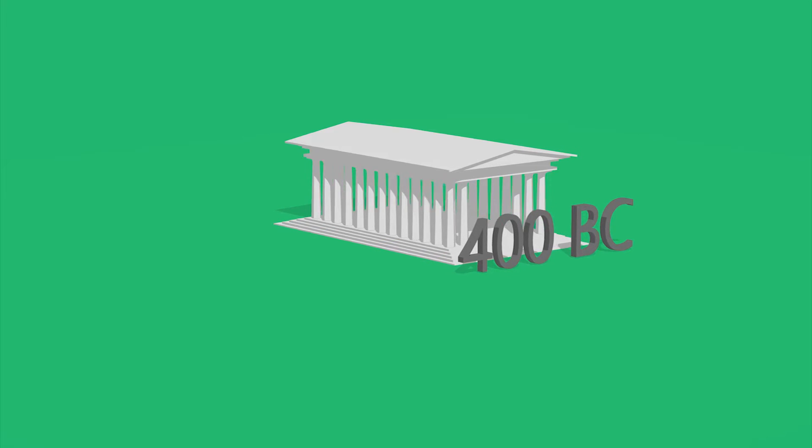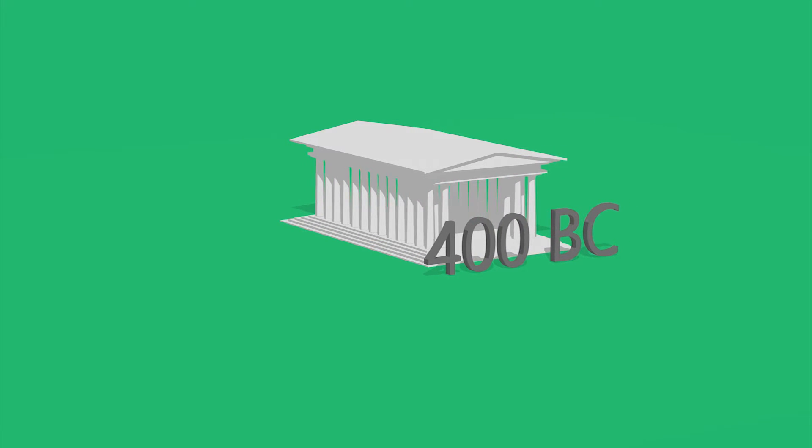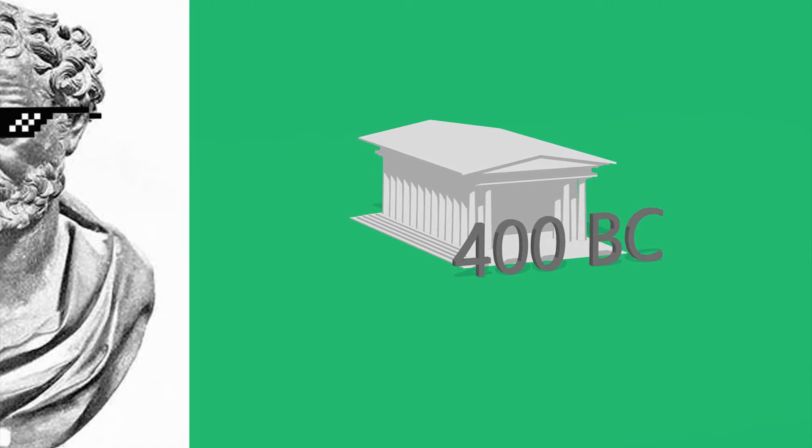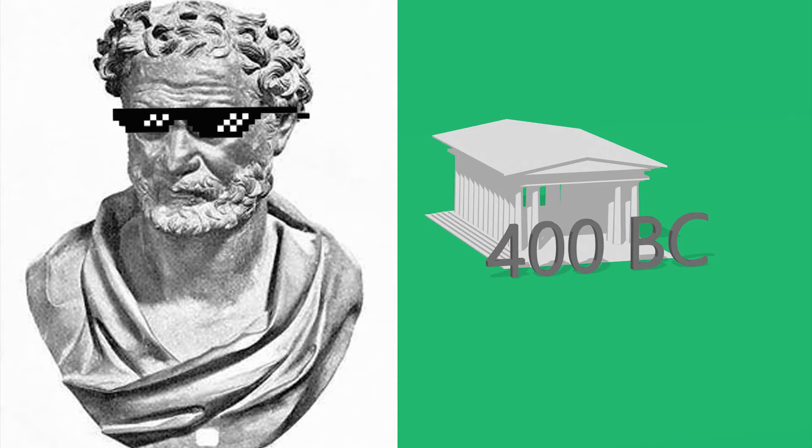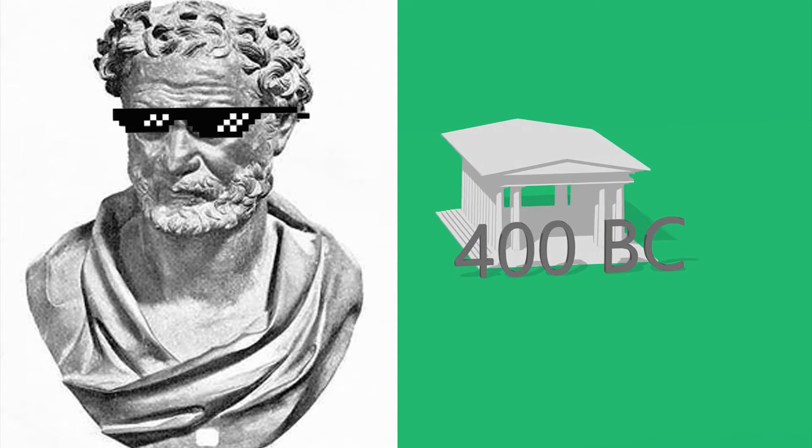But the history of atomic physics starts with the Greeks in 400 BC. Democritus had an idea: what happens if you keep splitting something like an apple? You keep cutting it half and half and half. You would probably end up with something that was unsplittable. That is atomos, the Greek word for unsplittable.